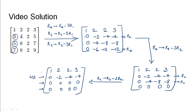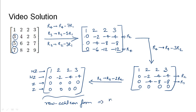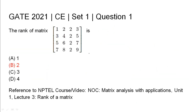The bottom two rows are zero, and the second and first rows are non-zero. Any further elementary transformation will not make the second row zero, so this is the row echelon form. The number of non-zero rows is 2, which is the rank. Therefore, the rank of this 4×4 matrix is 2. The relevant NPTEL reference has been listed.